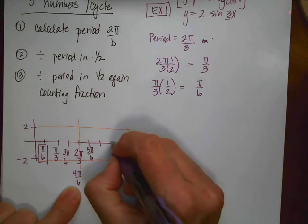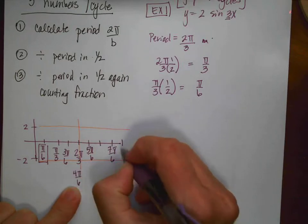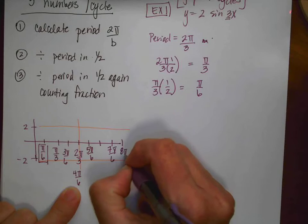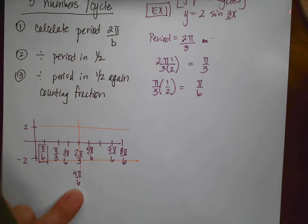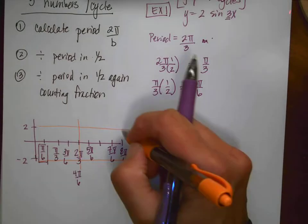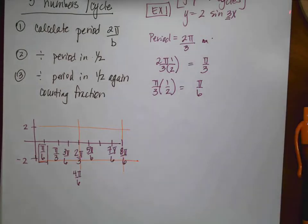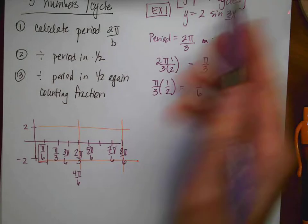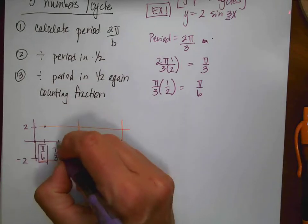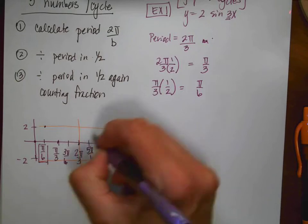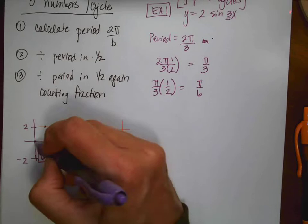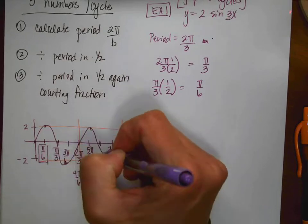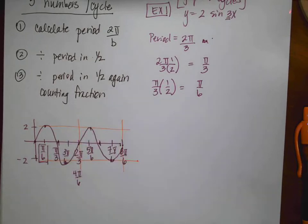Continuing to count by π/6: 5π/6, 6π/6, 7π/6, and 8π/6 — that's the end of the second cycle. Remember sine starts low, so the pattern goes: low, high, cross, low, finish — then high, cross, low, finish. I connect all the dots, and there's the sine graph.